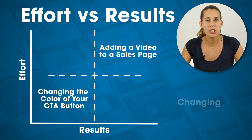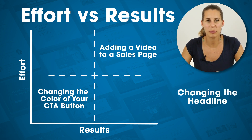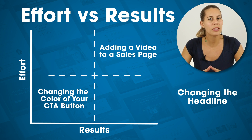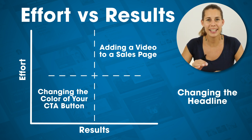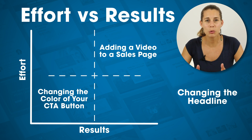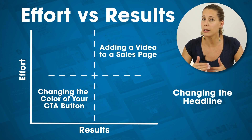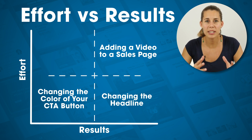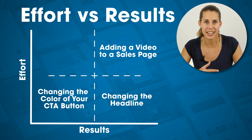Another example would be changing the headline on your page. Changing a headline is extremely easy — you just type a different headline. But the results can be really, really high if you nail the right headline. So this one would fall in the low effort and high possible results quadrant. As you can see, every possible test you can run would fall somewhere on this scale.